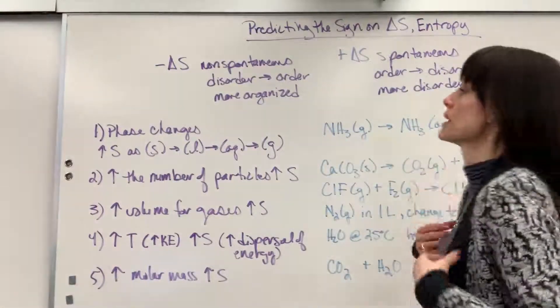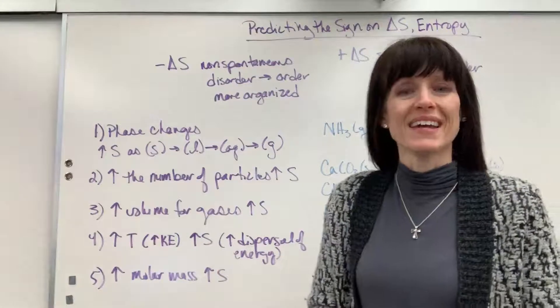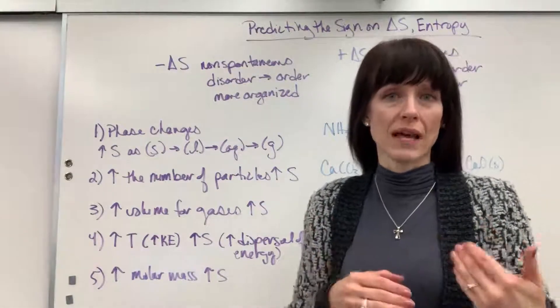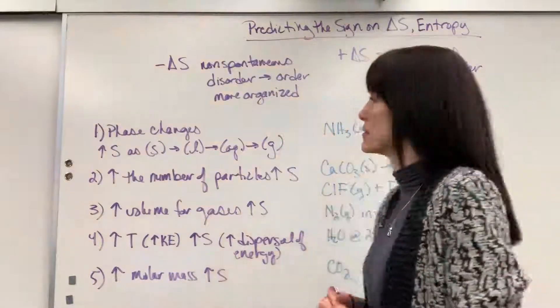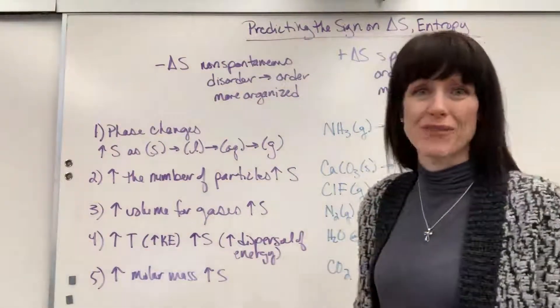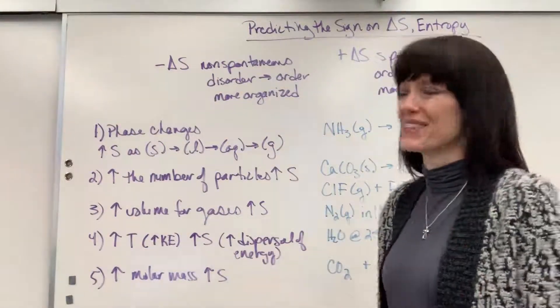So you could be given some questions of, predict the sign. Is the system becoming more or less ordered? And then give the negative delta S or the positive delta S. So here are five ways to predict, and I'm going to give you some examples with this.